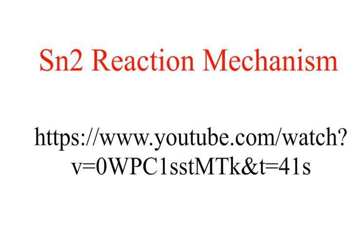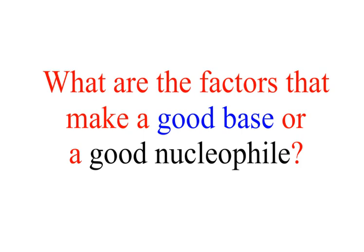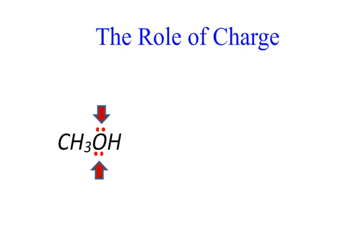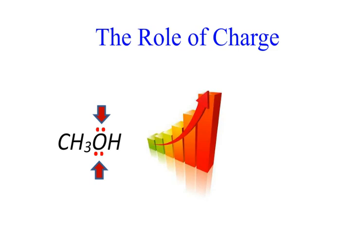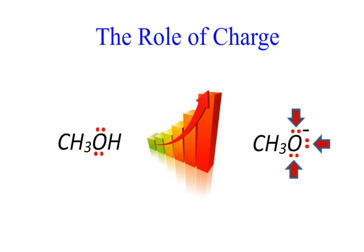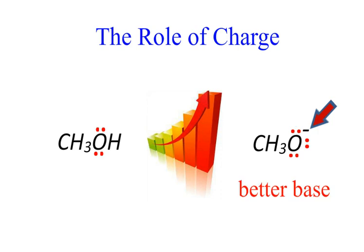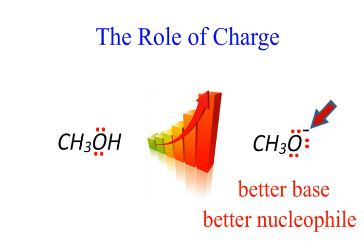What are the factors that make a good base or a good nucleophile? The role of charge: remember that we are talking about a species that is donating a pair of electrons. It is reasonable to expect that its ability to donate electrons will increase as it becomes more electron-rich. So negatively charged species are better bases and better nucleophiles than neutral species.